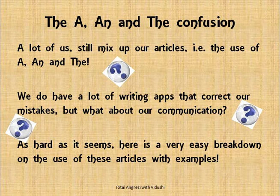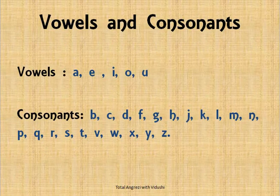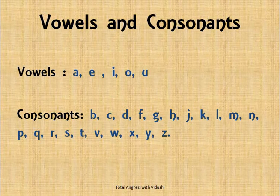Before we do articles, you need to know two concepts: vowels and consonants. Out of the 26 alphabets in the English language, A, E, I, O, U are the vowels. The rest of the letters — B, C, D, F, G, H, J, K, L, M, N, P, Q, R, S, T, V, W, X, Y, Z — are all consonants. Remember: A, E, I, O, U are vowels; everything else is a consonant.